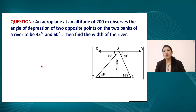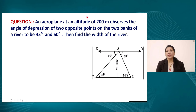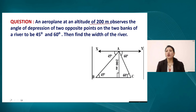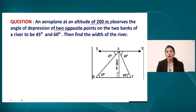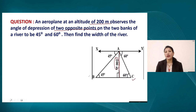Let us start with a few questions. The first question: an aeroplane at an altitude of 200 meters observes the angle of depression. The aeroplane is flying in the sky and we consider two points on either side — point B and point C — while the aeroplane is at point A.